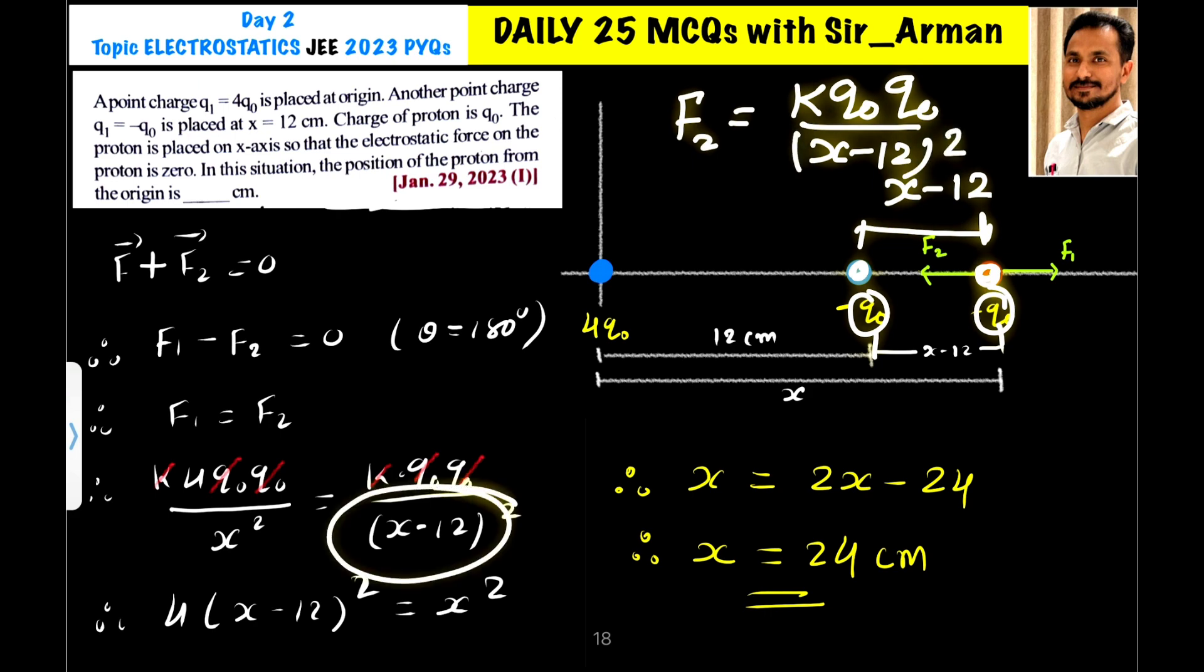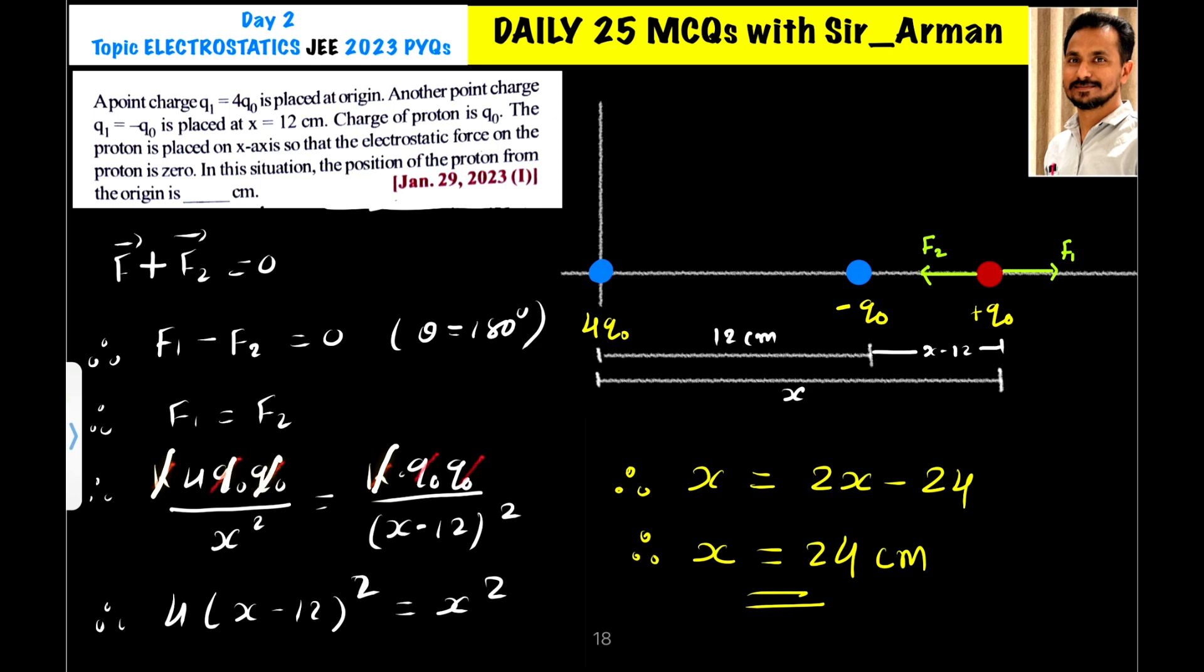That's what I have done here. K will get cancelled, Q0 Q0 Q0 Q0 will get cancelled. This term will be here, so this is 4 times x minus 12 whole squared, that equals x squared.